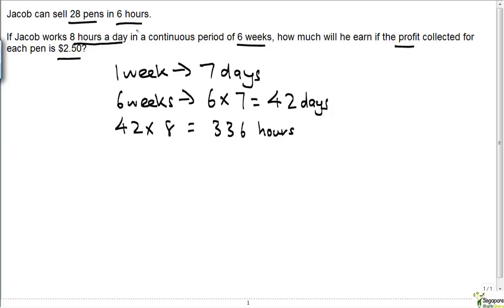Now for every 6 hours, Jacob can sell 28 pens. So, 336 divided by 6 times 28. The reason why I am doing this is because 336 over 6 is the number of sets of 6 hours.